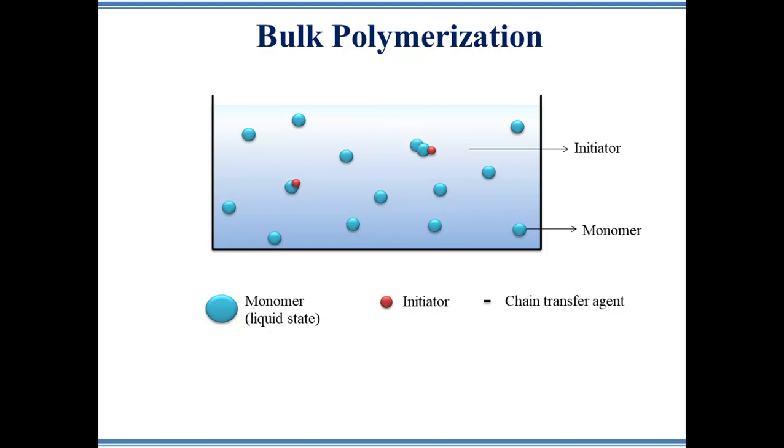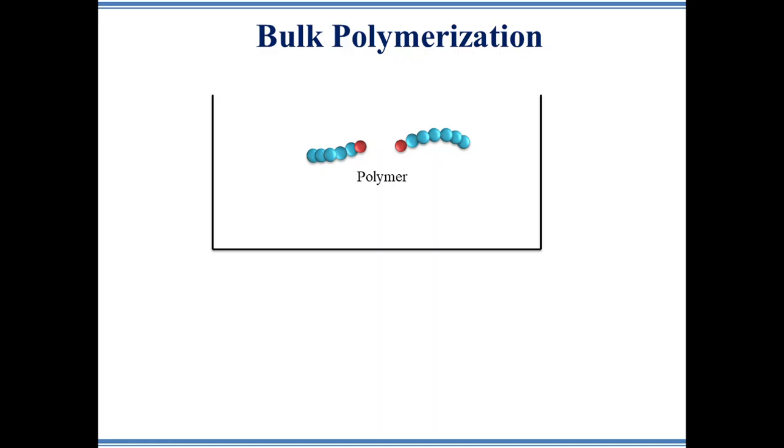During propagation, monomers combine together and grow into a polymer chain radical. Polymerization is carried out under continuous agitation to transfer heat and mass properly. To terminate the reaction, chain transfer agent is added. Finally, two polymer chain radicals combine together and form a long neutral polymer chain. This reaction is purely exothermic and a wide range of molecular masses are produced.